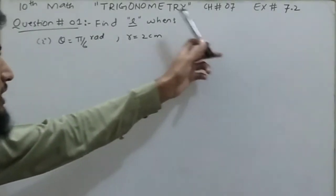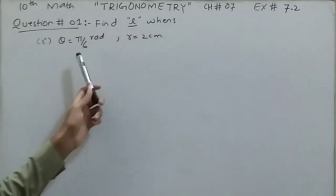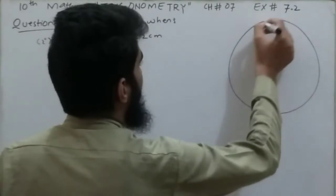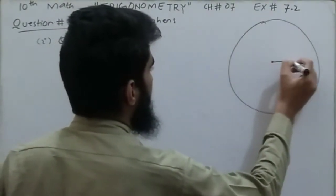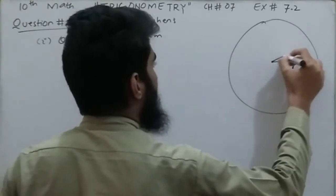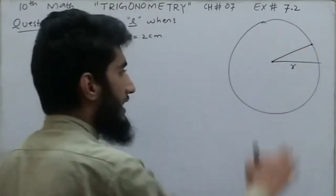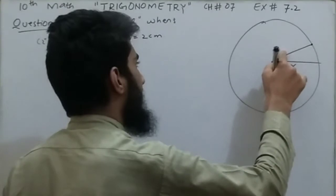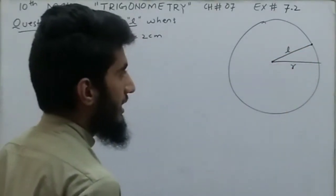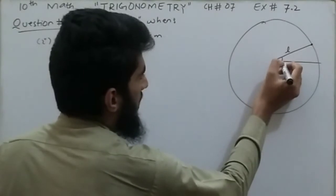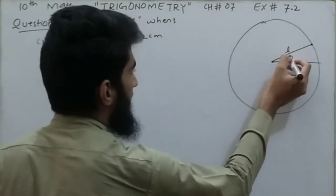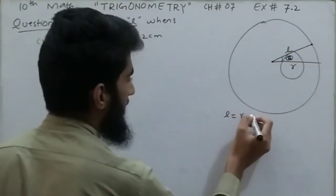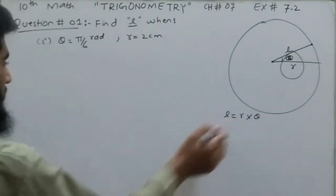In exercise 7.2, chapter 7 trigonometry, we need to find the value of l when theta is π/6 radian and the radius r is 2 centimeters. Let's suppose this is a circle, this is the center, and this is the radius. Any point on the circle is on the circumference. The length from the circumference, let's call it l, and the angle subtended by this arc is theta. According to geometry, l will be equal to the product of radius and theta.